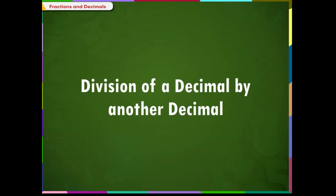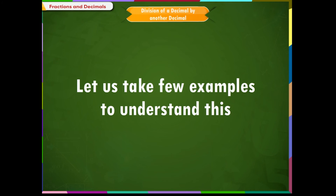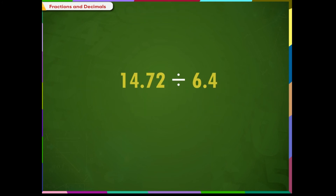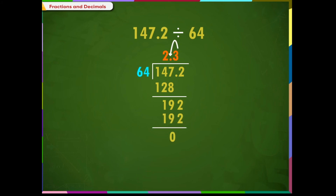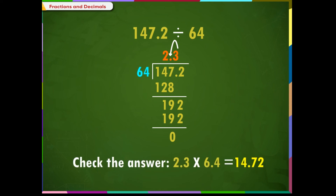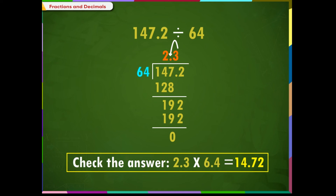Division of a decimal by another decimal. Let us take a few examples to understand this. If the divisor is a decimal number, move the decimal point in the divisor all the way to the right to make it a whole number. Move the decimal point in the dividend the same number of places. Divide the numbers using the long division method. Since there is only one place of decimal in the dividend, we put the decimal point on the result by counting one place from the right. Check your answer by multiplying the quotient by the divisor.